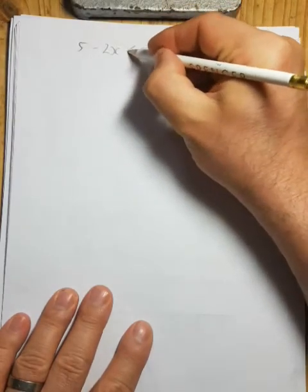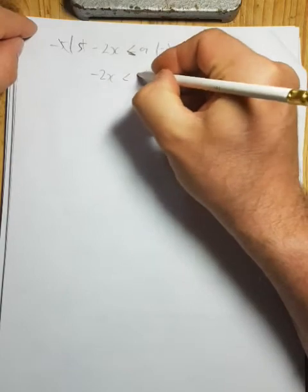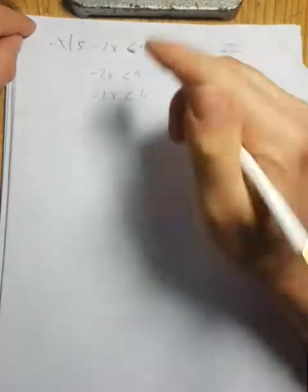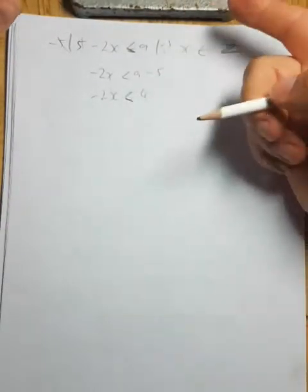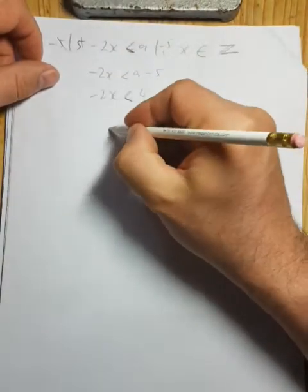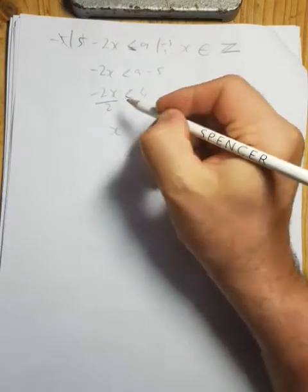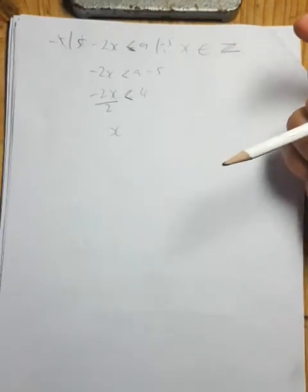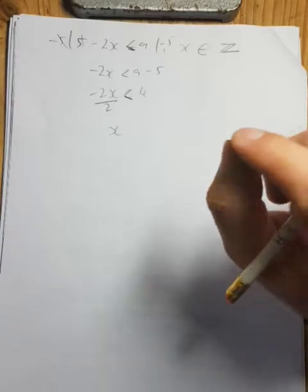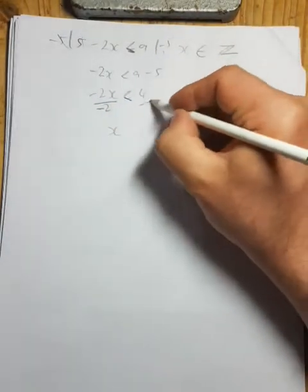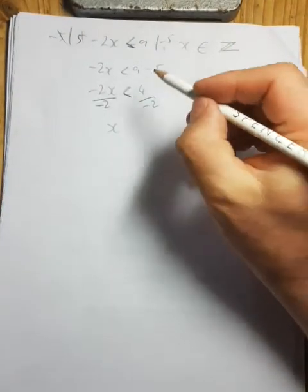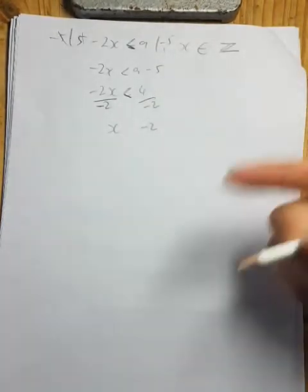Now let's look at another example: 5 minus 2x is less than 9, where x is an element of ℤ. Same as normal — move anything that's not an x to the right hand side. We have a plus 5 here, so minus 5 from both sides. 5 minus 5 is 0, so minus 2x is less than 9 minus 5, which is 4. I don't want minus 2x, I want just x. To change it from minus 2x to x, divide by minus 2. Minus 2 divided by minus 2 is plus 1, and 4 divided by minus 2 is minus 2.